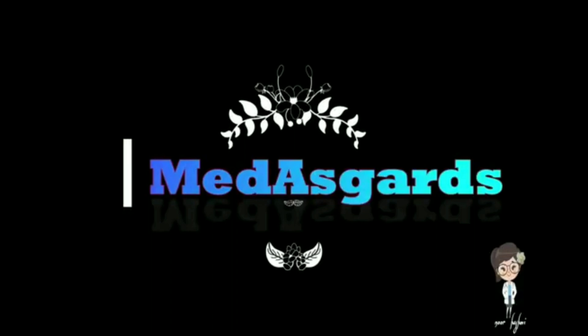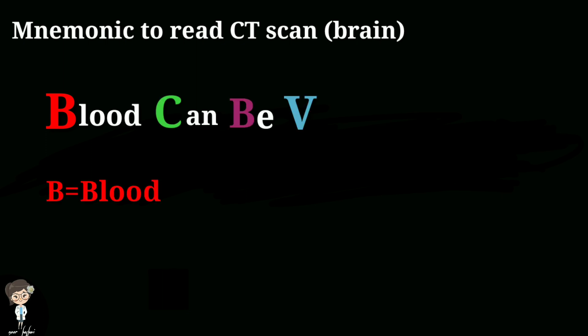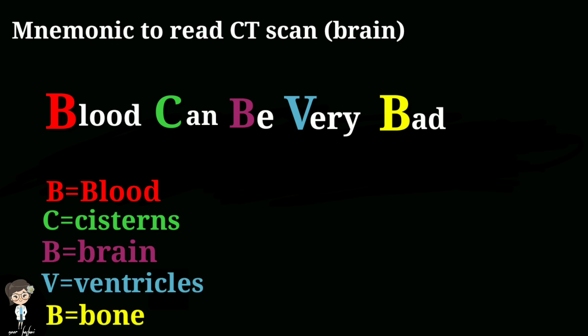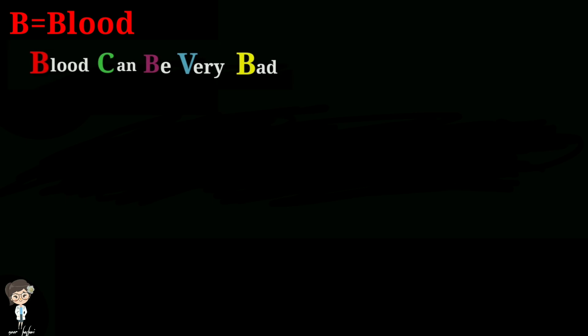Hello, dear guardians. Today we will learn to read CT scan brain. The mnemonic which can be useful is 'Blood Can Be Very Bad,' in which you can see the sequence of important things to see in a CT scan brain, which are: Blood, Cisterns, Brain, Ventricles, and Bone.